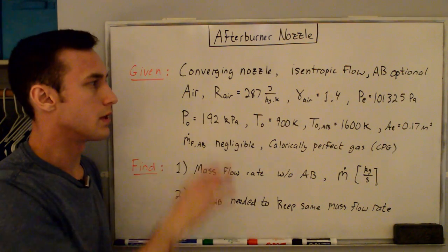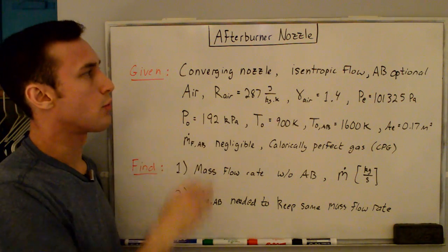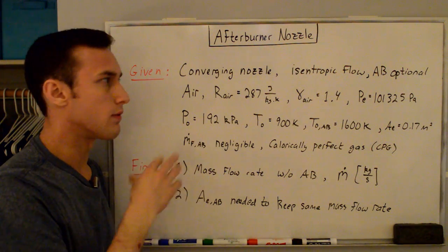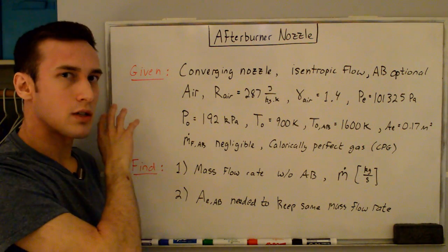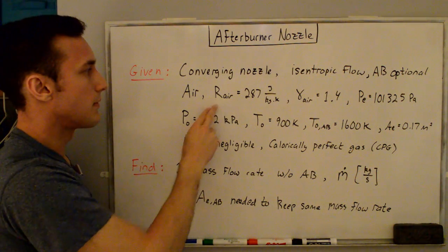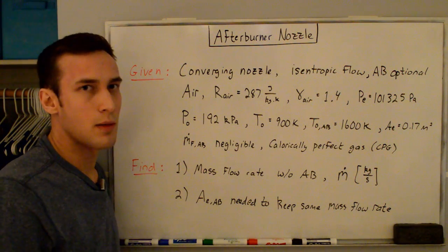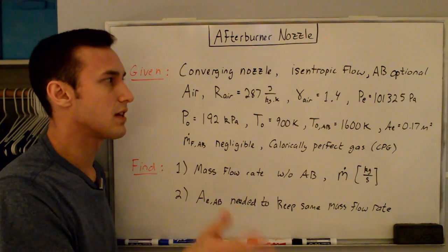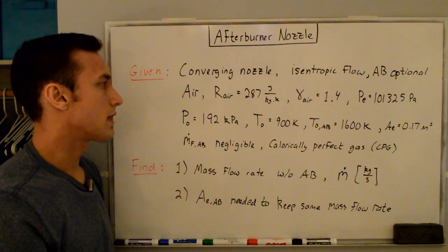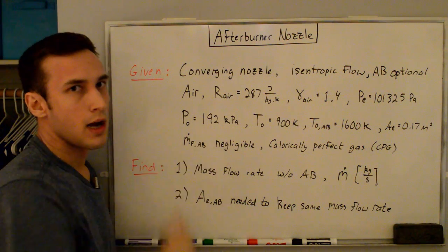Let's quickly go through some of the givens. We're talking about a converging nozzle operating isentropically — no losses due to friction. The afterburner is optional. I'm assuming we're treating the flow as air. The specific gas constant of air is 287 J/kg·K, the specific heat ratio is 1.4. The engine is at sea level, so the exit pressure is 101,325 pascals. The stagnation pressure at the nozzle inlet is 192 kPa for both afterburner on and off.